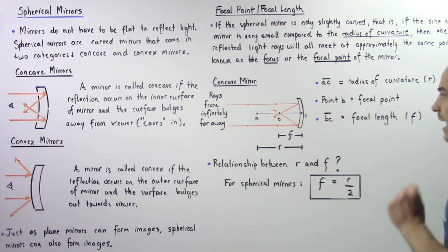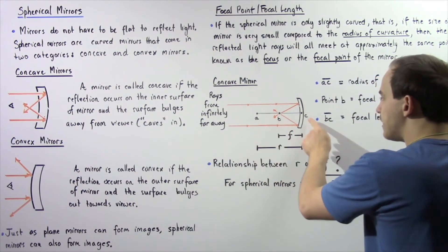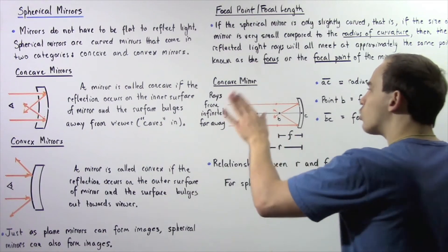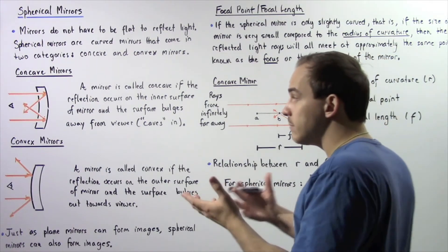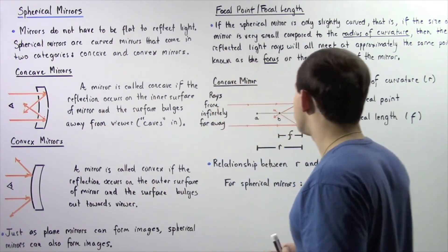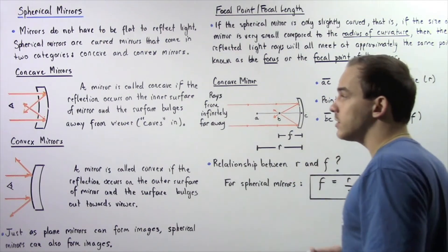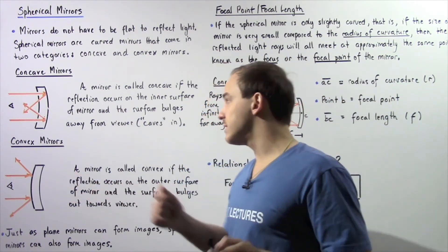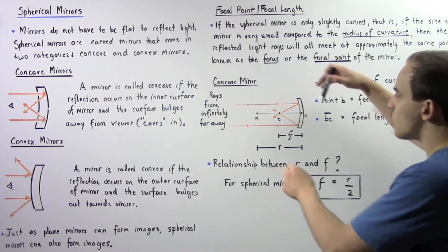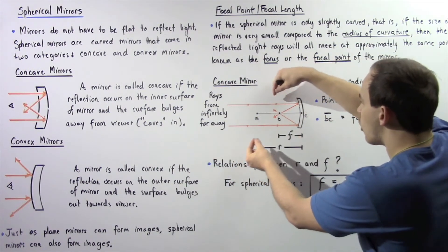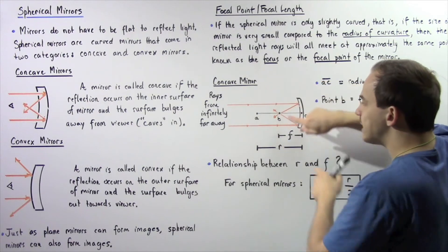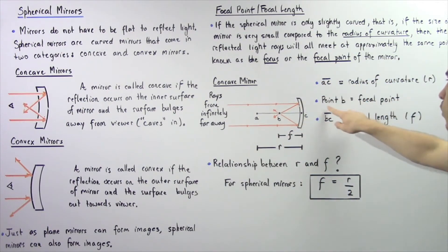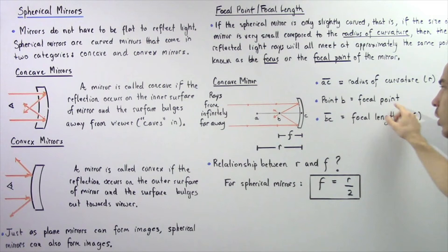We have labeled points A, B, and C. Suppose the rays of light are coming in from an infinitely far distance away — for example, rays coming from the sun with the mirror on earth. As the rays come in, they reflect and all essentially meet or intersect at point B. Point B is known as the focal point of the mirror, also known as the focus.